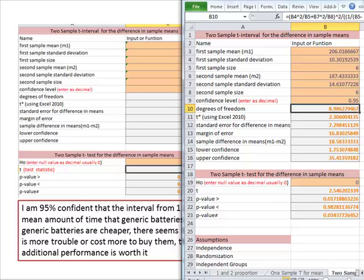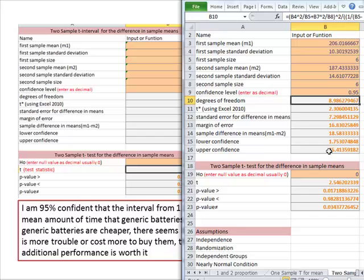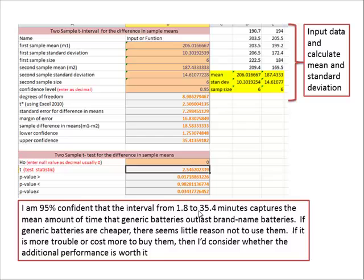Let's see, the lower level is 1.75, the upper is 35.4. So somewhere between 1.7 or 1.8 minutes and 35.4 minutes is what I can expect, the mean amount of time that the generic batteries outlasted the brand name batteries. If the generic batteries are cheaper, there seems little reason not to use them. If it's more trouble or cost to buy them, then I consider whether the additional performance is worth it. So that's just my little conclusion.